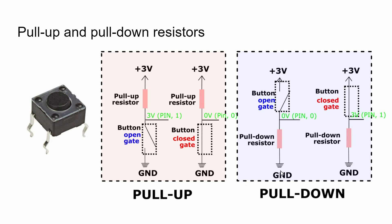The second option is using a pull-down resistor, which works in a similar way. One wire of the button goes directly to the power supply and the other goes to ground through the pull-down resistor. With a pull-down resistor, the states are opposite compared to pull-up: when the gate is open we have state zero, and when someone presses the button and the gate is closed we have state one. You can use either of these options.